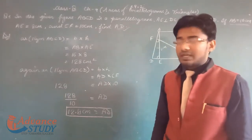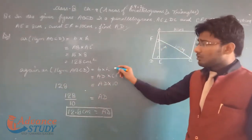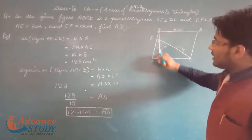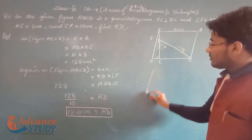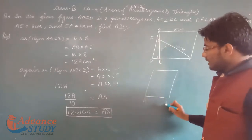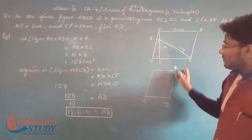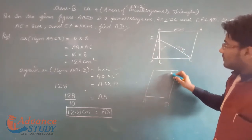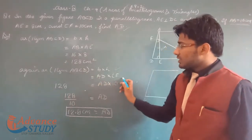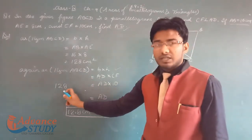Now for the next area of parallelogram ABCD using a different base: if we take AD as the base, then the height should be CF. So area of parallelogram ABCD = AD × CF. CF's value is 10 cm, and area of parallelogram ABCD is already found to be 128.